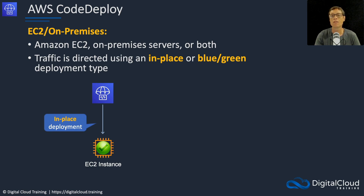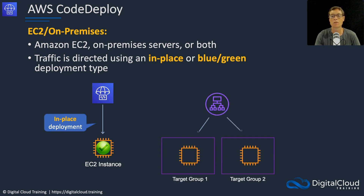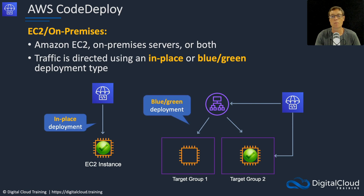That means the application is likely to experience downtime. With a blue-green deployment, your live traffic goes to target group one. CodeDeploy updates target group two and then takes out target group one.